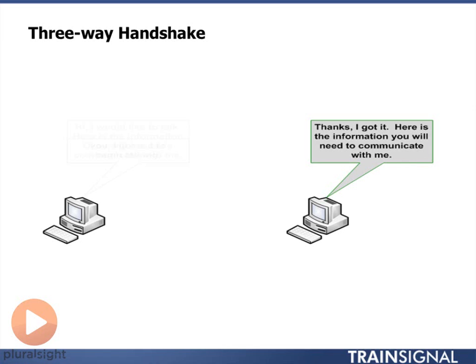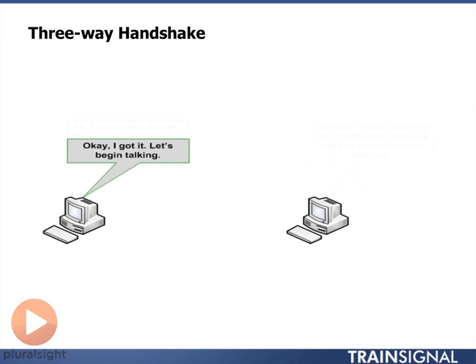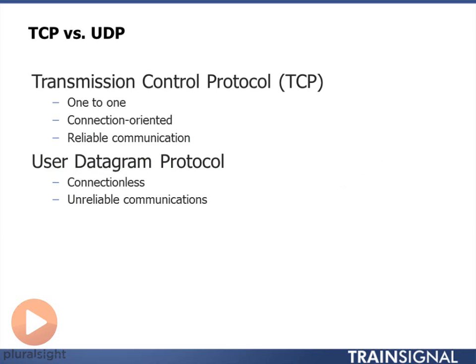The third part of this three-way handshake is the initial computer saying back: Okay, I got your information. So basically, now that you have my information and I have yours, let's begin talking. This takes place before any actual transmissions occur. Each computer needs to share its information with the other so that it knows exactly how to communicate effectively. And that is what makes it connection oriented.